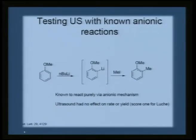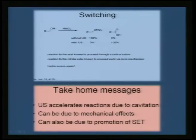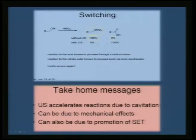Testing ultrasound with unknown anionic reactions: one reaction known to proceed purely via an anionic mechanism showed that ultrasound has no effect on the rate or yield. For a switching reaction — conversion of an alcohol using nitric acid — with ultrasound you see complete conversion to the switching form, whereas without ultrasound you see essentially 0 percent conversion. Reaction to the acid proceeds through a radical cation mechanism; reaction to the nitrate ester proceeds purely via an anionic mechanism.